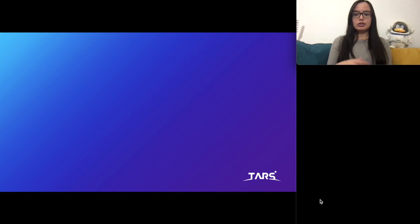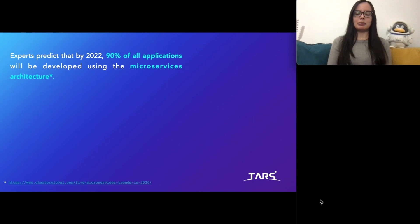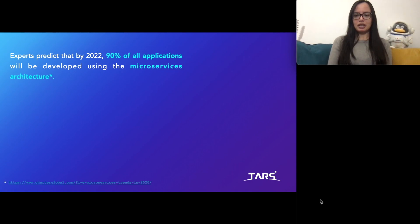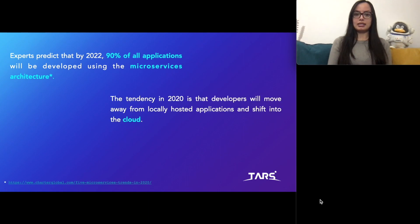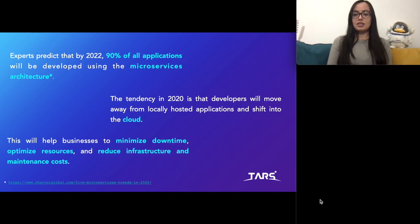Before we talk more about TARS, I'll explain a little bit about microservices and why microservices is a very hot topic nowadays. Experts predict that by 2022, 90% of all applications will be deployed using microservices. This is due to the fact that applications are growing and have the need for scalability, and because of that, companies and developers will start moving away from locally hosted applications into the cloud.